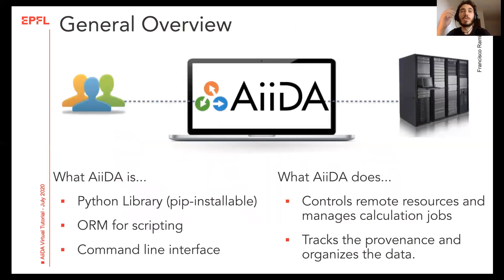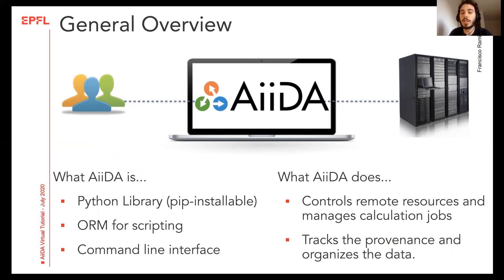AIDA is a Python library that you can pip install on your working machine and it will provide you with a set of tools to use for doing your research work. As users, you typically handle these tools either through a command line interface called Verdi, or a Python ORM to be used while writing script files or in a Python shell. When you use these tools you will be able to easily manage your calculations irrespective of where they are running — either locally or on a remote machine — and AIDA will also keep track of the provenance for your work automatically.